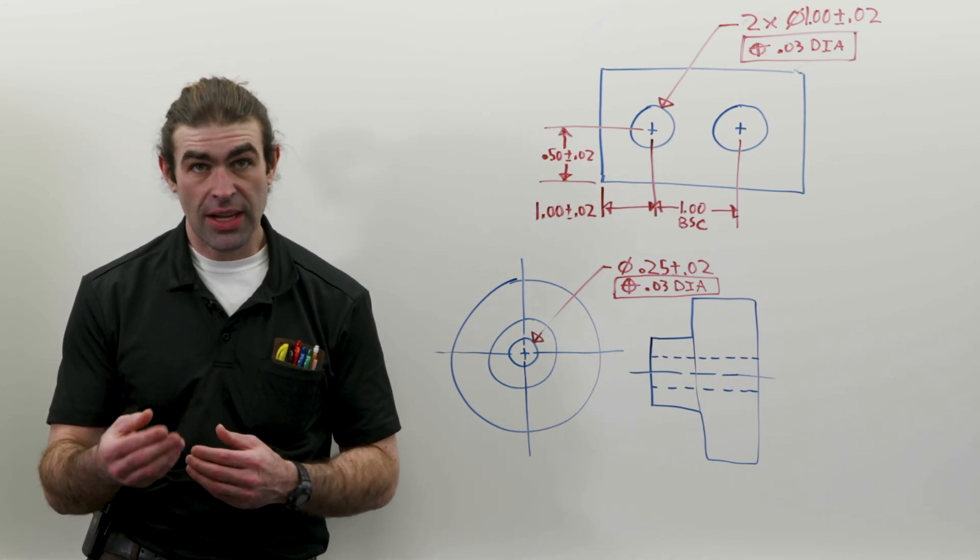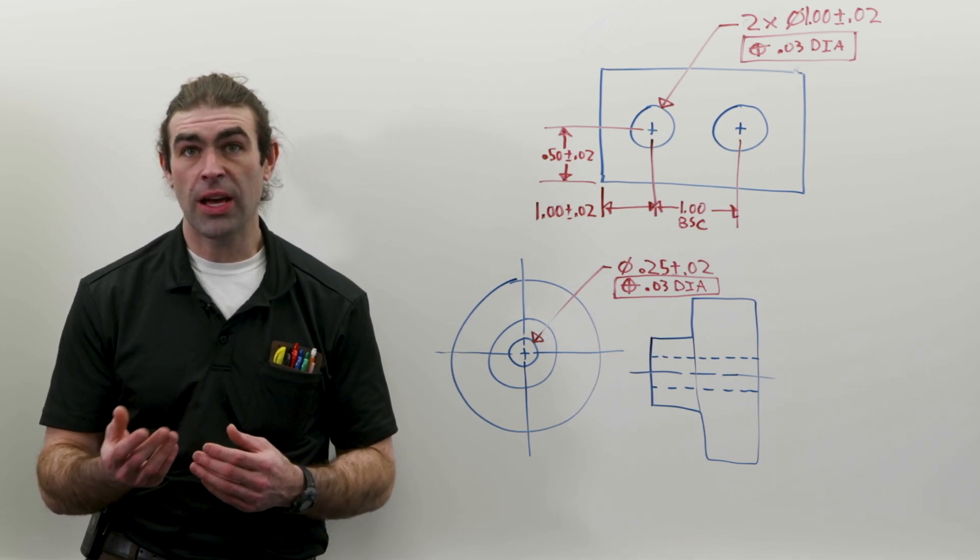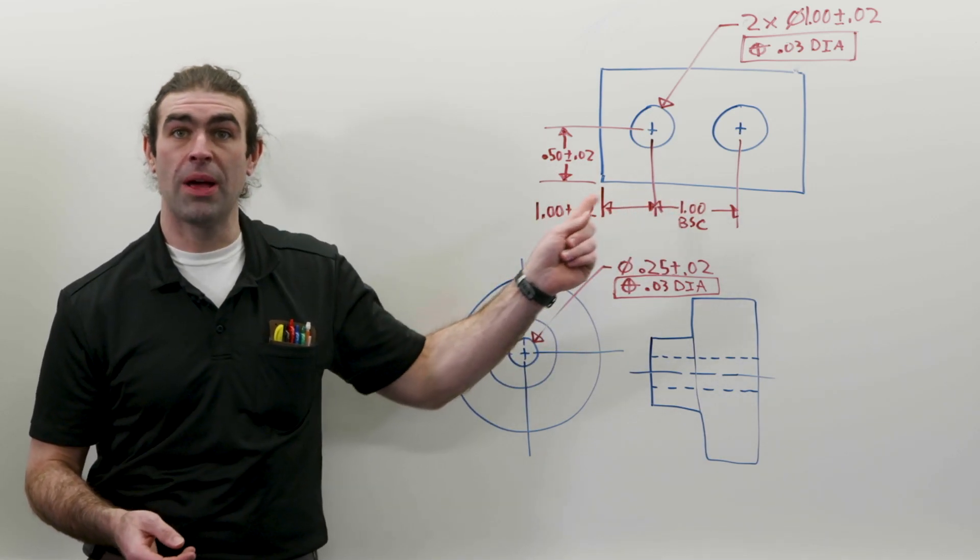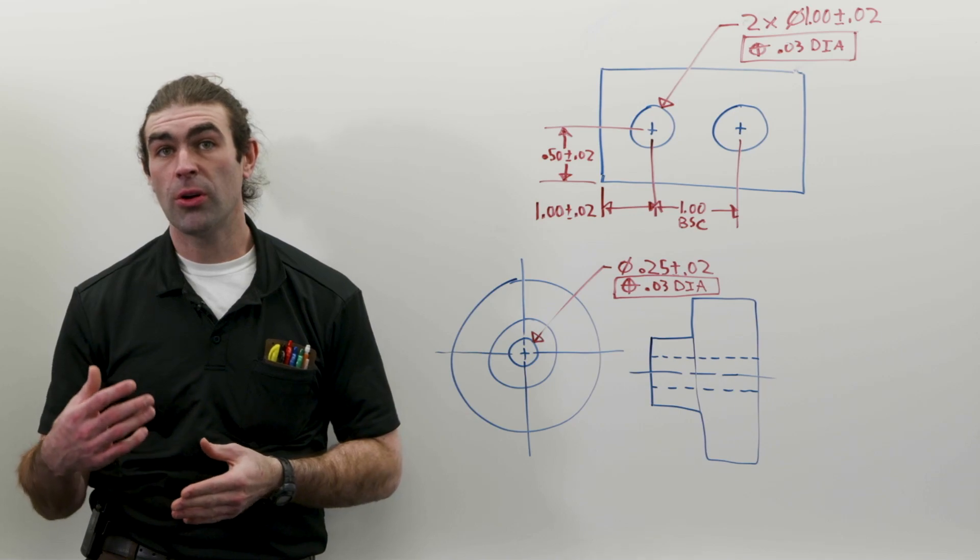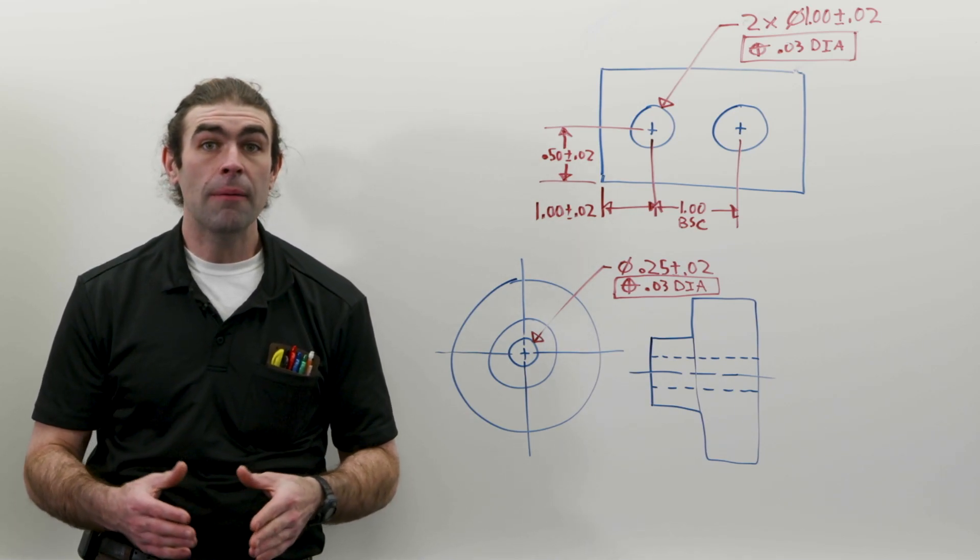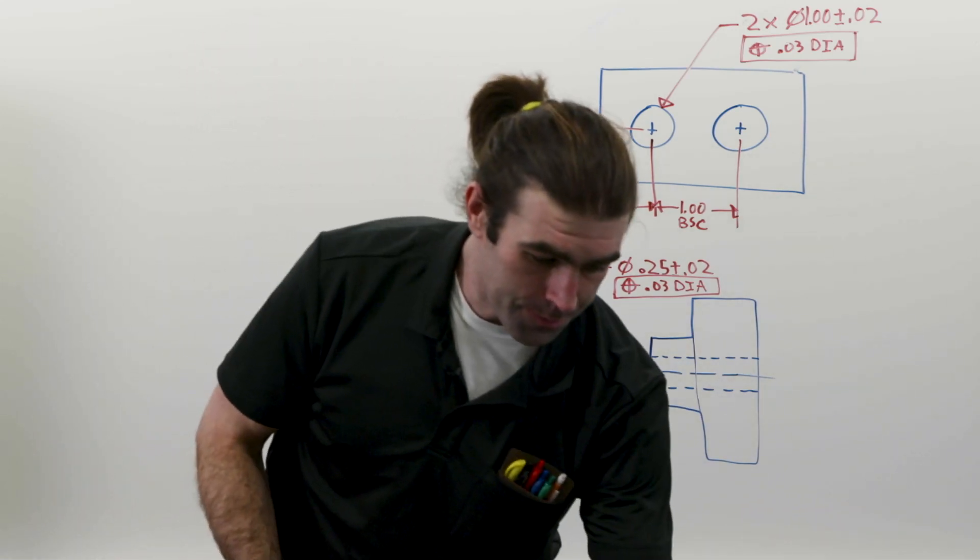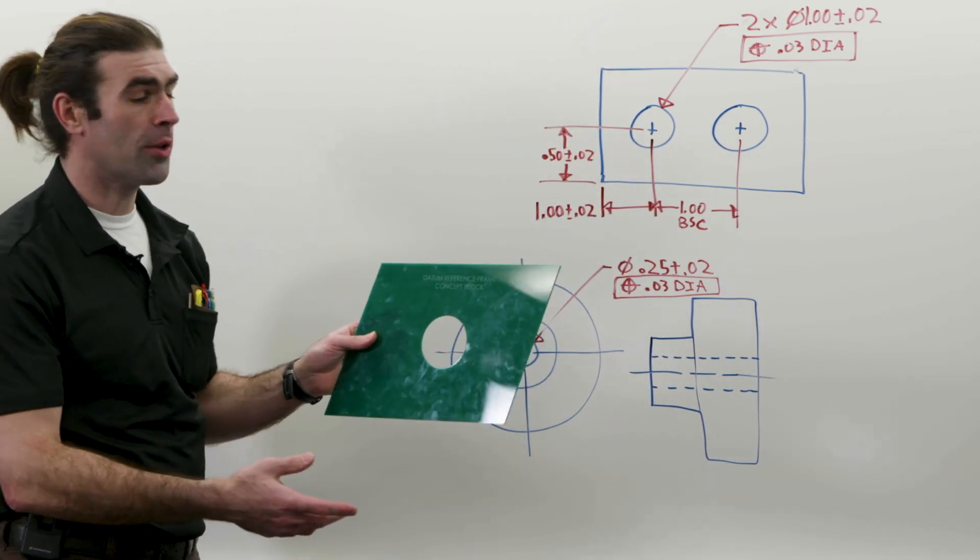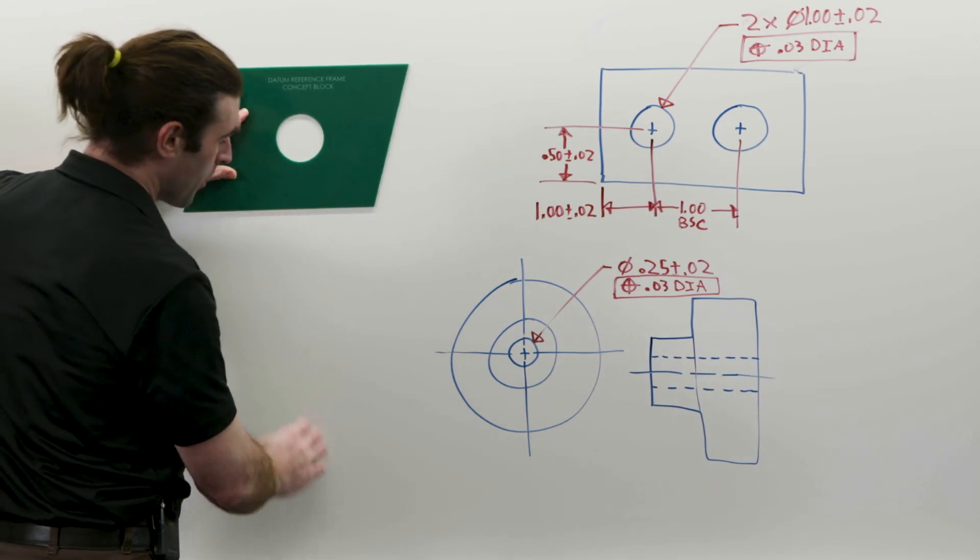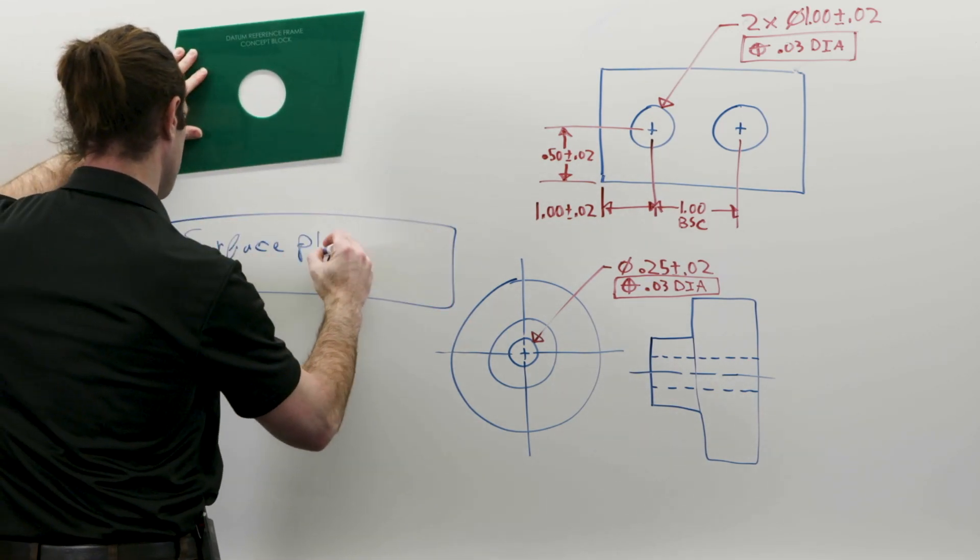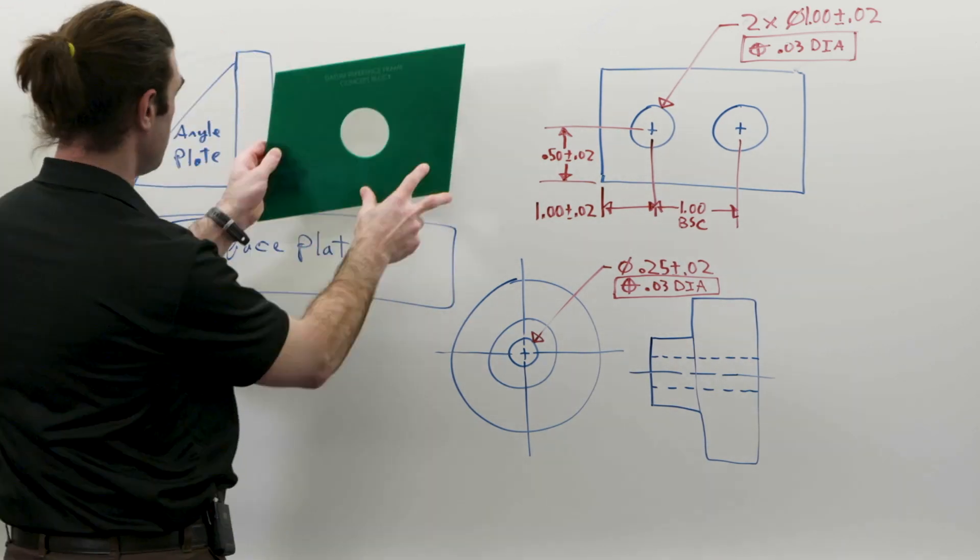Where this system really breaks down, in my estimation, is that you don't have datums. You could say it's obvious where you're measuring from, but when you go to actually inspect it, you've got to set up. Here's an example. I don't have a block with two holes, but bear with me. You're going to set this part up to measure it.